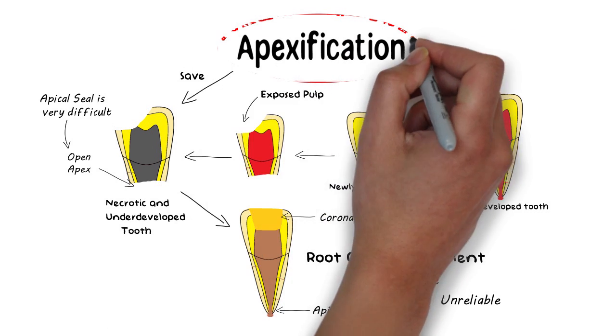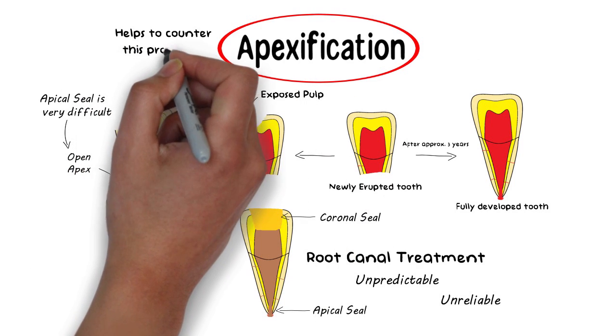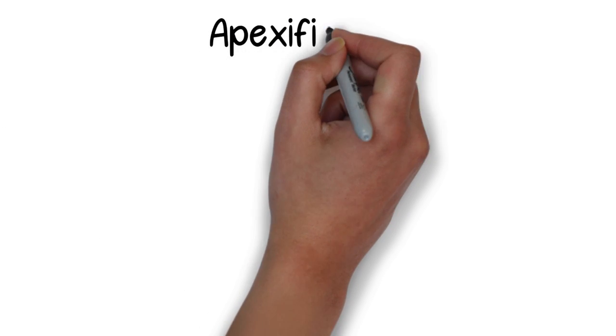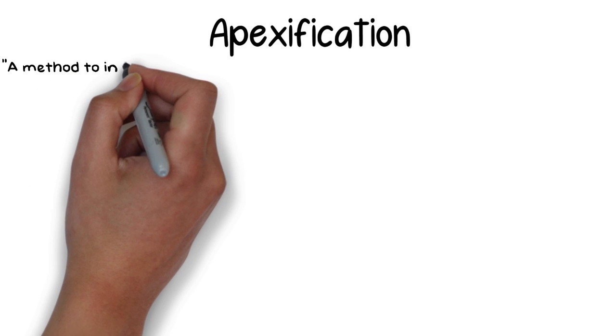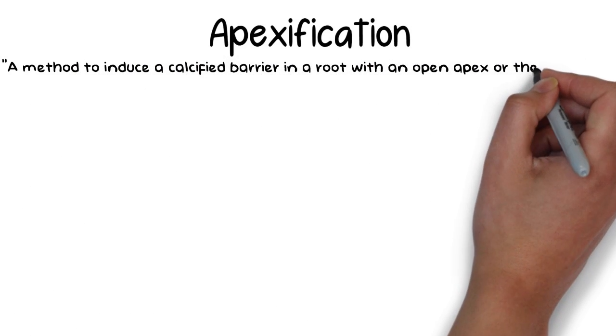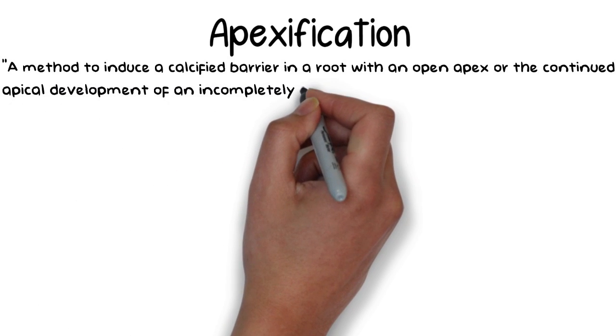Apexification is a process that can help to counter this problem in developing teeth that have unfortunately undergone necrosis. In the 10th edition of the Glossary of Endodontics, apexification is defined as a method to induce a calcified barrier in a root with an open apex, or continued apical development of an incompletely formed root in teeth with necrotic pulps.